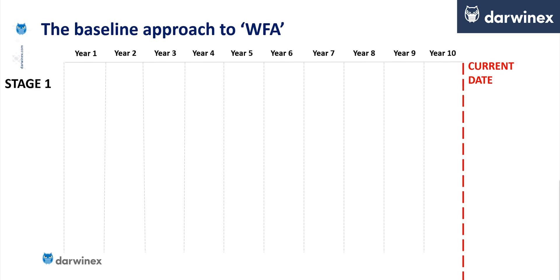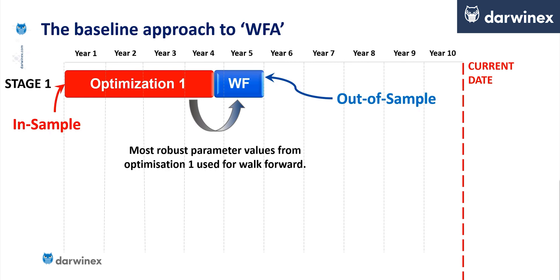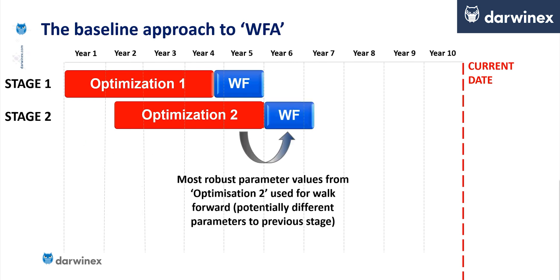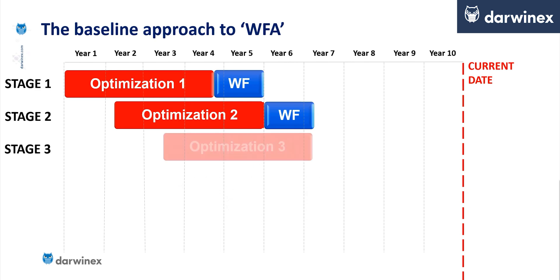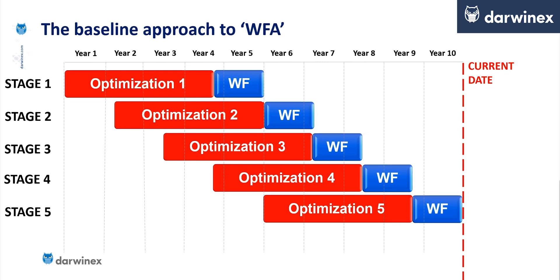So we're now going to turn our attention to the issues that are very specific to the walk-forward optimisation process. But before we look at those, let's take a very quick look at what I'm calling the baseline approach for walk-forward analysis. As we saw last week, this is a multi-stage approach to optimisation, where there are multiple pairs of optimisation and walk-forward phases. From each of those pairs, the optimisation produces the most robust parameter values that then get passed into the walk-forward validation. As we progress from stage to stage, each optimisation produces its own parameter values that may well be different to those produced in the previous stages.